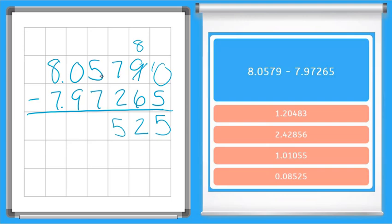Now again we can't do that so we need to borrow. Now can we borrow from the zero? No we cannot. So we're going to have to come all the way over to the ones place, the 8, and borrow from it. The 8 will become a 7. That makes this a 10 here. Now we can borrow from the 10. 10 becomes a 9 and the 5 becomes a 15.